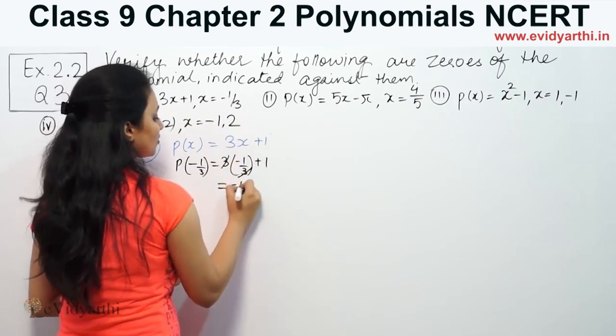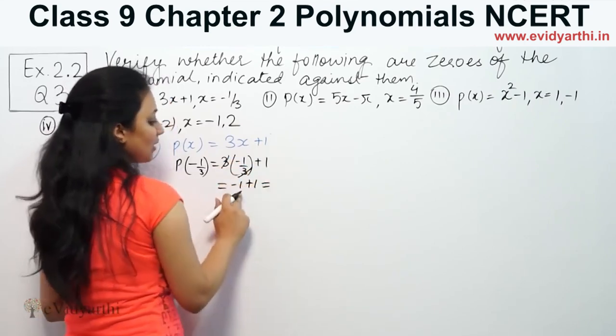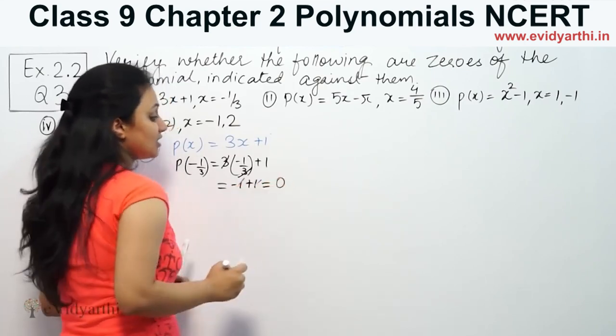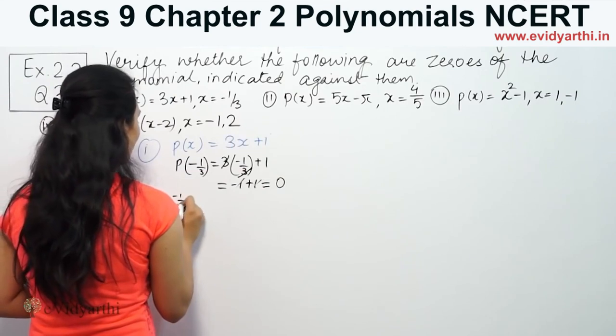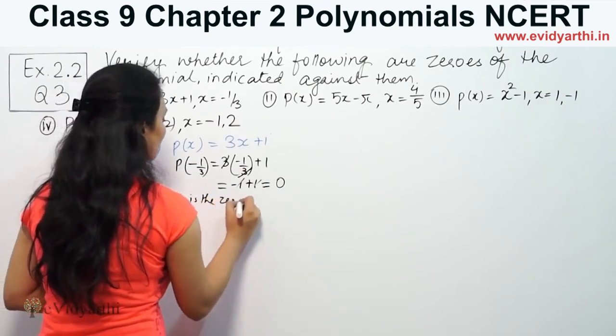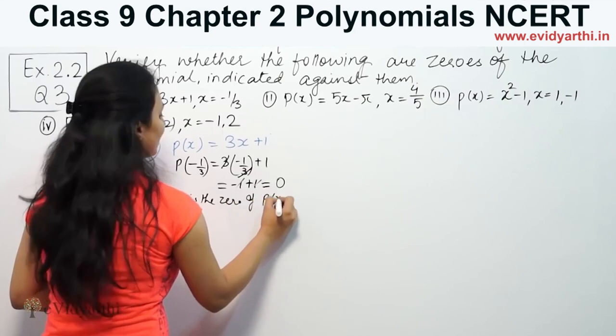3 and 3 cancel. So this is -1 + 1, which equals zero. Therefore, -1/3 is the zero of P(x).